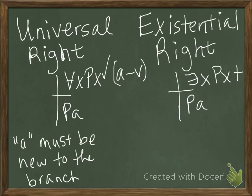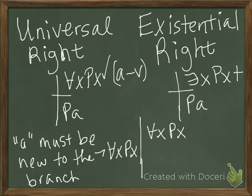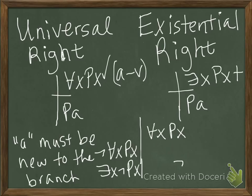Why is that? Well, if you think about it, it makes sense. If we have for all x, px on the right-hand side of a truth tree, that's like saying it's false that for all x, px on the left, which is just the same as there exists an x, not px on the left. So if we were to instantiate that on the left-hand side, we'd have the restriction. That's why we have a restriction on for all x, px when it's on the right-hand side. And likewise, there exists an x, px on the right would be the same as a universal statement, so that's why that doesn't get a restriction.